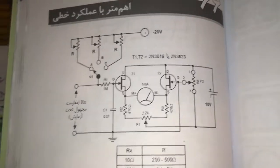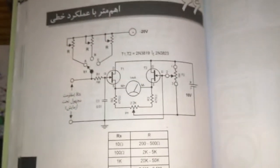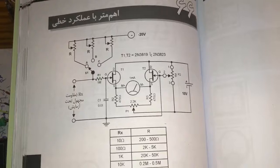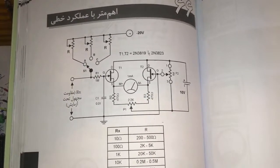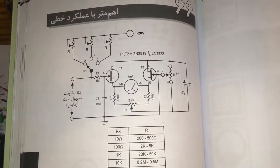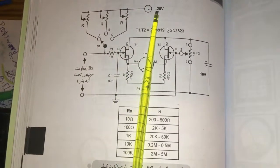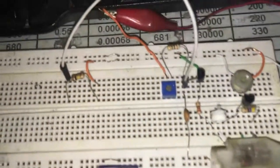Very good, we are going to the schematic. This is the schematic. The designer called this an ohm meter with linear functioning option. As you can see, the designer used minus 20 volts, but I used minus 12 volts.